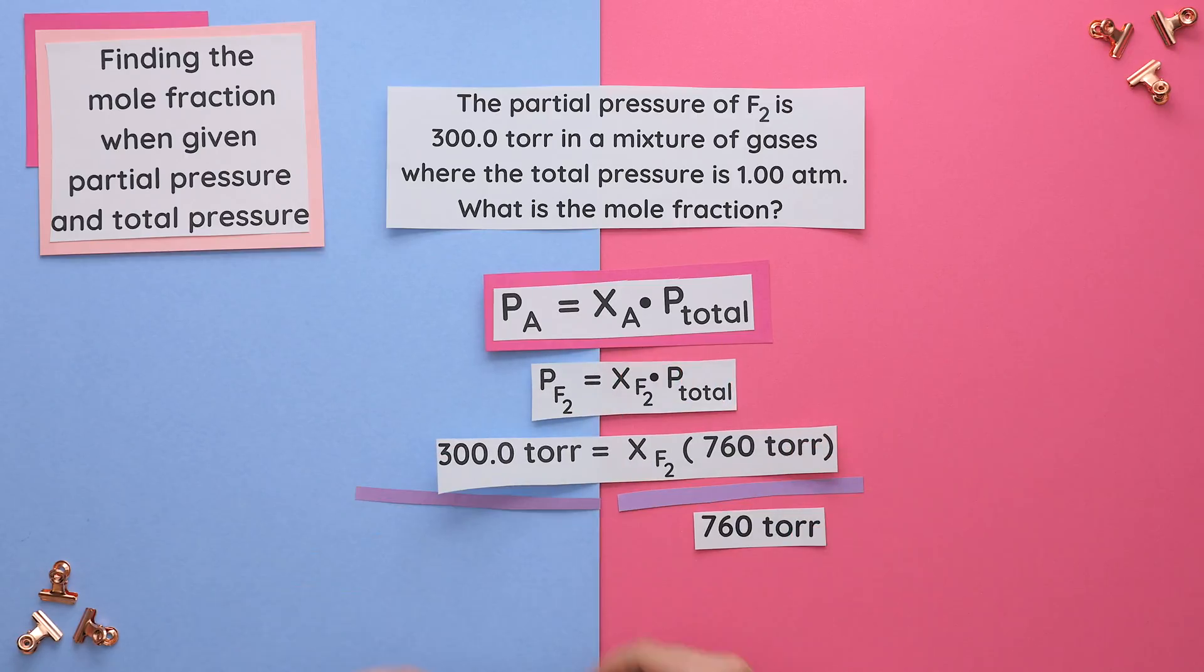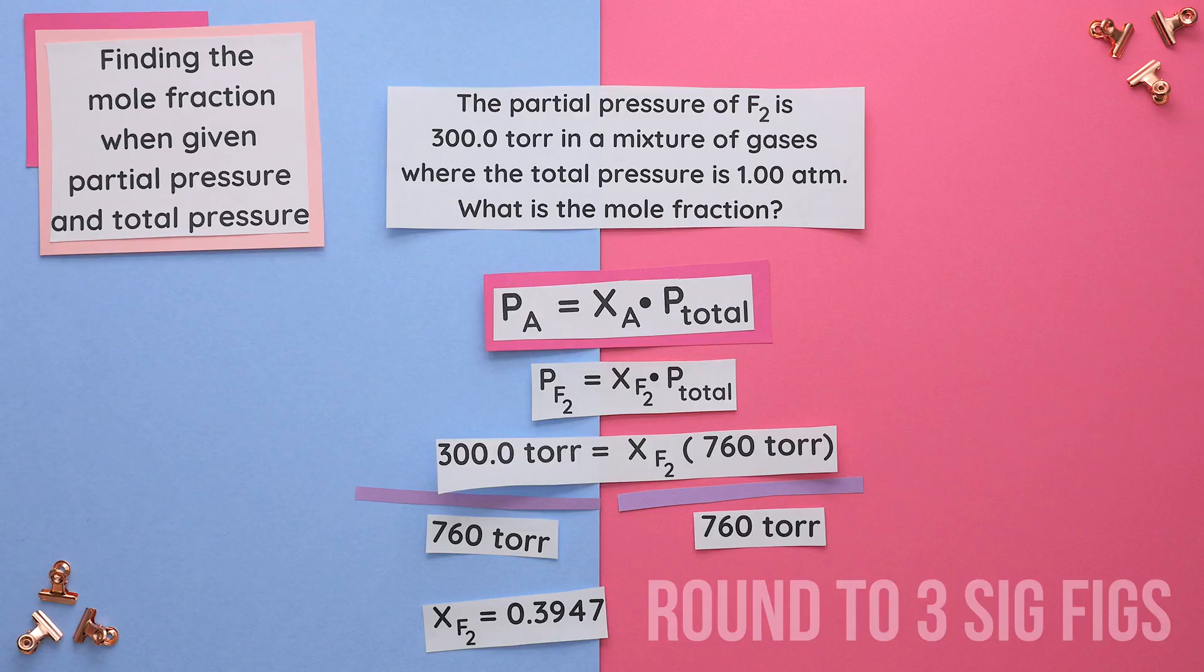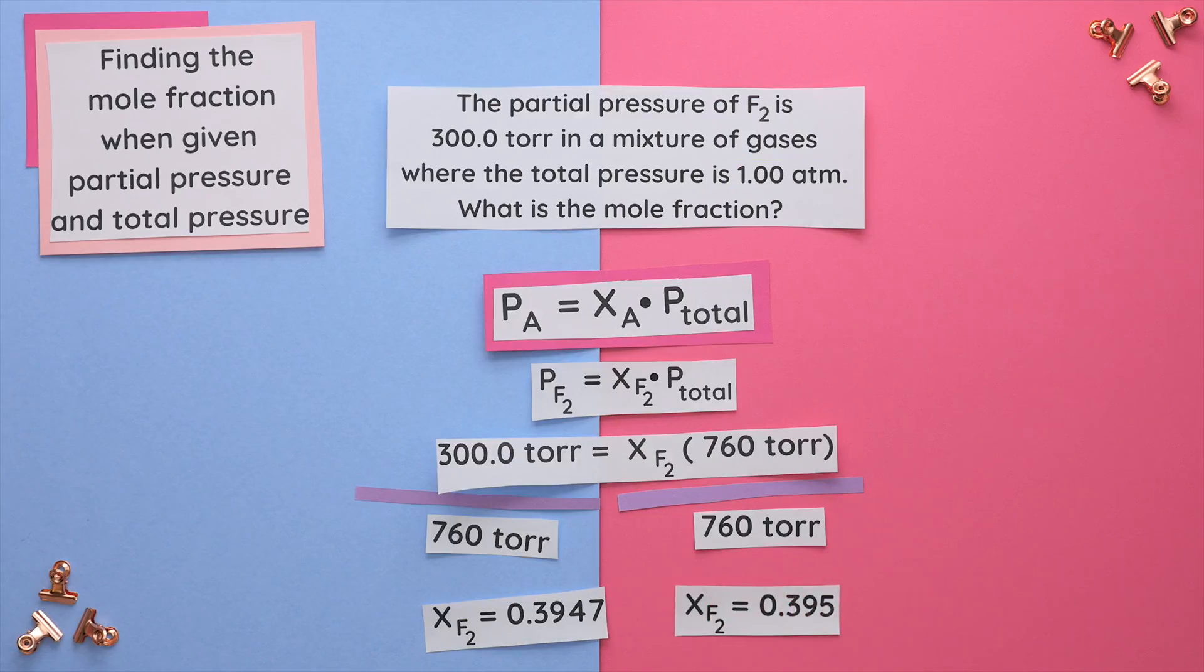But we need to round up to three sig figs since our lowest given sig fig value was three. And this is the correct mole fraction.